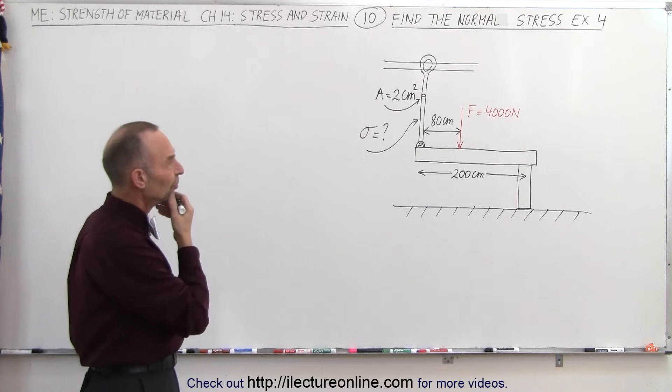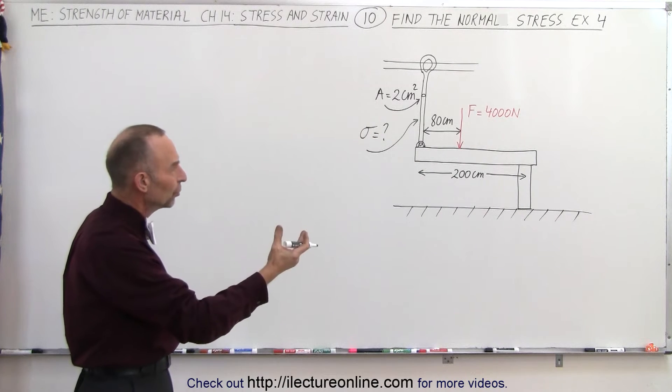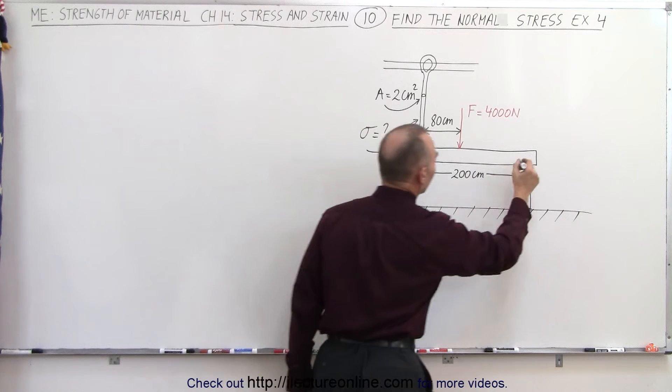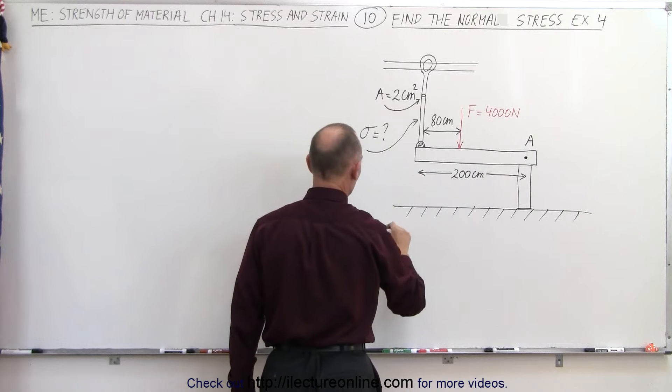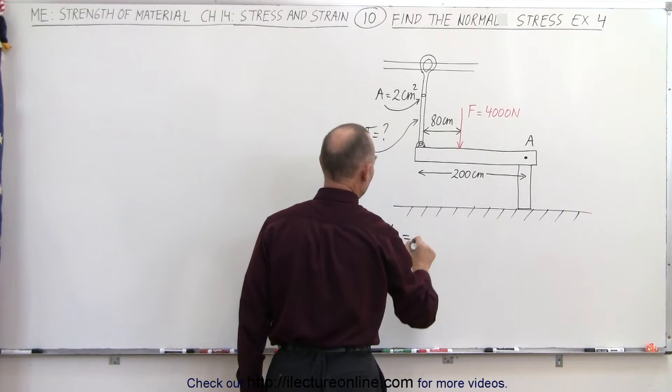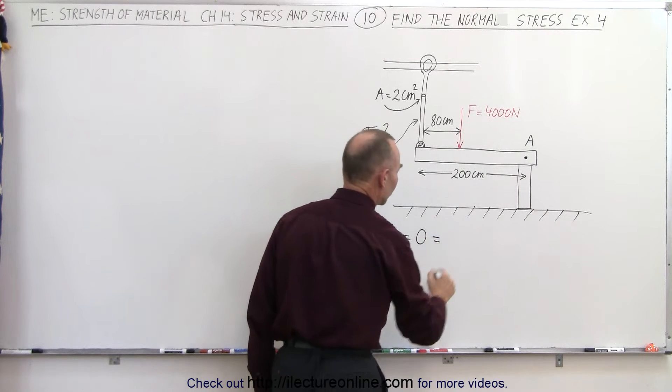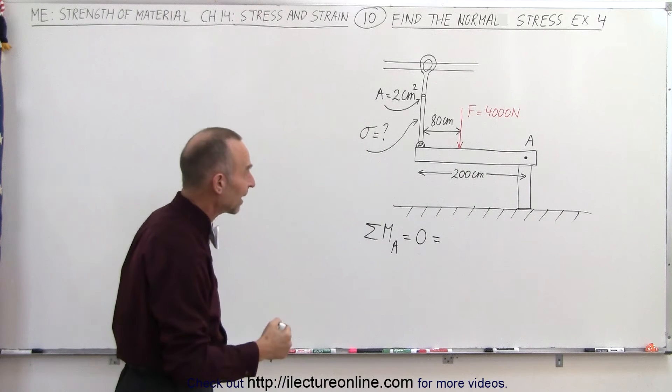So how do we do that? Well, first of all, we need to find the moment about point A. So let's take this as point A, and we're going to find the sum of all the moments about point A, and of course we know that's going to be equal to zero because nothing is moving, it's a static situation.